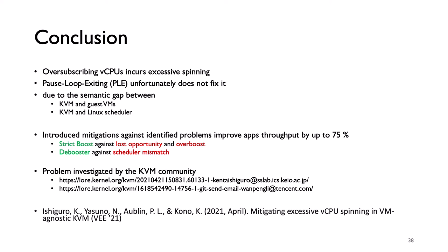In conclusion, over-subscribing vCPUs incurs excessive spinning. Pause Loop Exiting is a hardware feature against it. Unfortunately, PLE does not fully fix it due to the semantic gap between KVM and guest VMs or KVM and the Linux scheduler. The introduced mitigations improve application throughput by up to 75%. This work is being investigated by the KVM community. Please see the links below and our paper for more detailed experiments and analysis. Thank you for your attention.